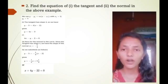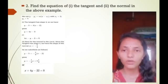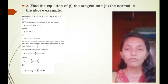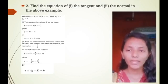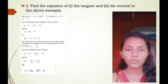Now for the normal to the curve. Since the tangent has slope 4, we have the slope of the normal m = -1/4. So we substitute as follows: y - 5 = -1/4(x - 2), which gives y = -1/4 x + 5½, or x + 4y - 22 = 0.